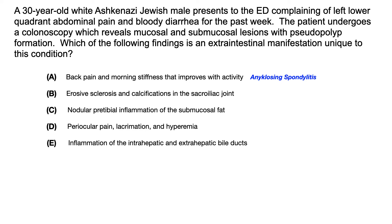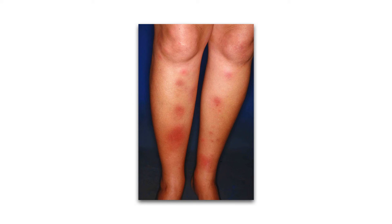Choice B — erosive sclerosis and calcifications in the sacroiliac joint — is referring to sacroiliitis. Choice C — nodular pre-tibial inflammation of the submucosal fat — is referring to erythema nodosum. Notice the little nodular, roundish inflammation in the pre-tibial space, specifically located in submucosal fat. That description is erythema nodosum.